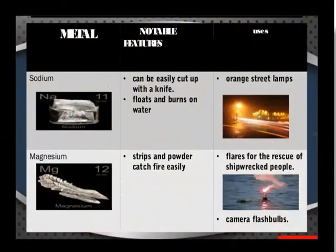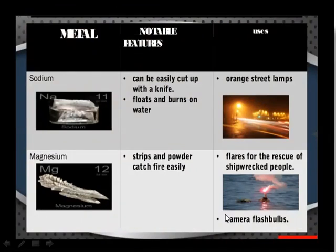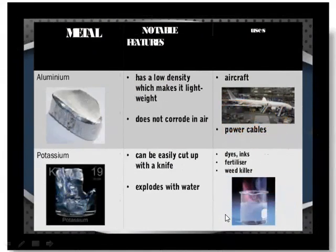Some metals with notable features and uses: sodium can easily be cut with a knife, floats and burns on water — used in orange street lamps. Magnesium strip and powder catch fire easily and are used in camera flash bulbs. Aluminium has low density making it lightweight, does not corrode in air — used in aircraft and making power cables. Potassium can be cut with a knife, explodes with water — used in dyes, inks, fertilizers and weedicides.